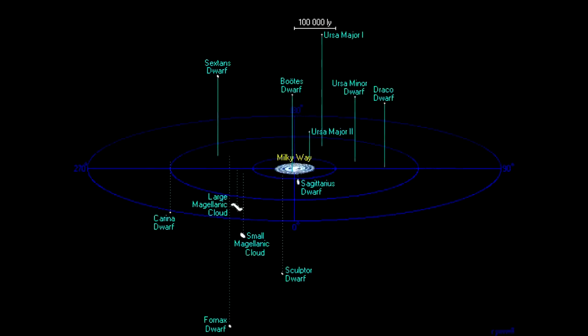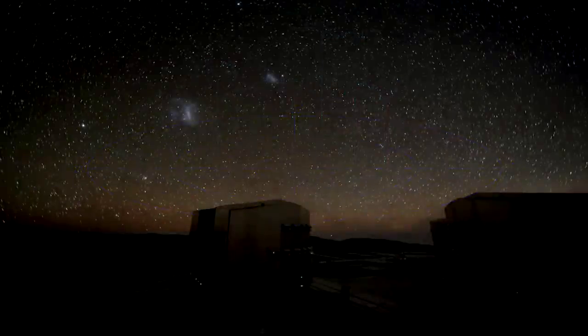This map shows the closest dwarf galaxies. They are all gravitationally bound to the Milky Way, requiring billions of years to orbit it. Sagittarius dwarf is the closest. It is so close that it is slowly being ripped apart by our galaxy. Fornax is the furthest away. But the two dwarfs of the most interest can be seen in the southern night sky.